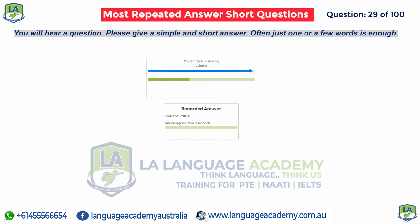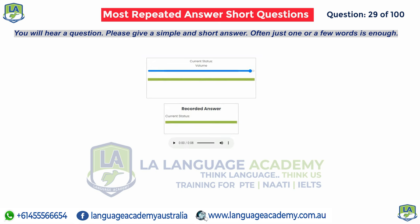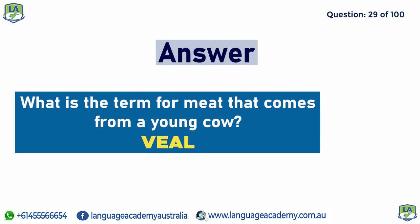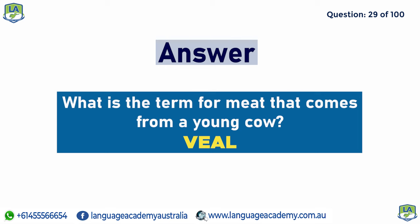What is the term for meat that comes from a young cow? Veal.